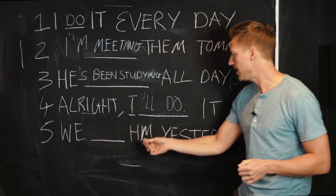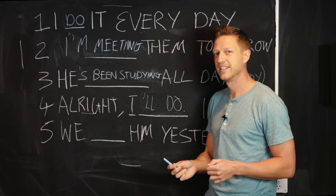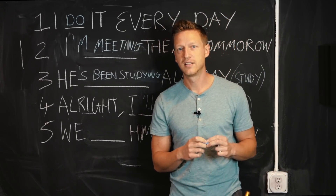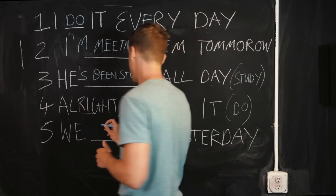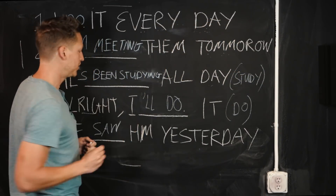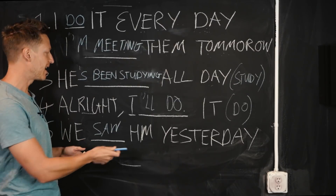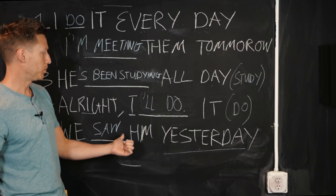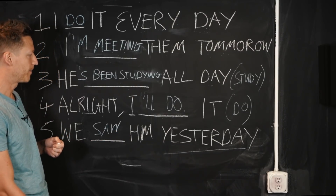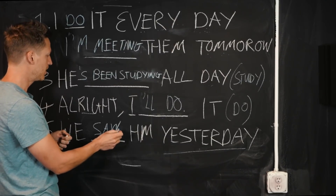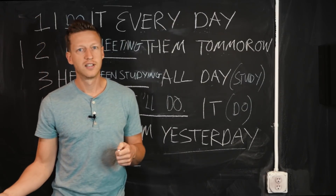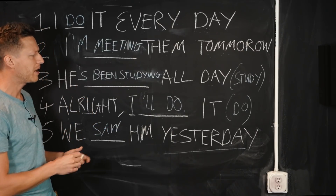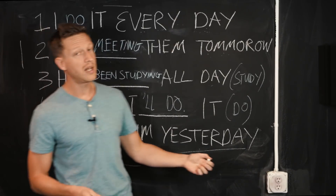The next one: We something him yesterday — use the verb 'to see'. We saw him yesterday. This is an irregular verb, so be careful about that. 'Yesterday' is a great clue because you know it's most likely going to be the simple past. A lot of people get confused between the simple past and the present perfect, but that one should have been an easier one for you. So let me know how you did — how many did you get right out of five?